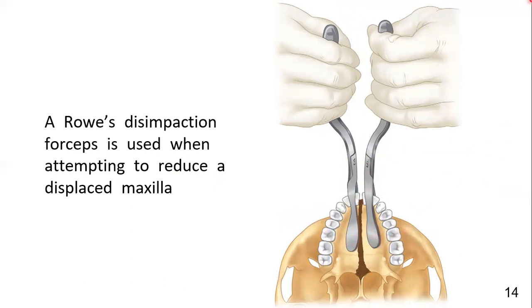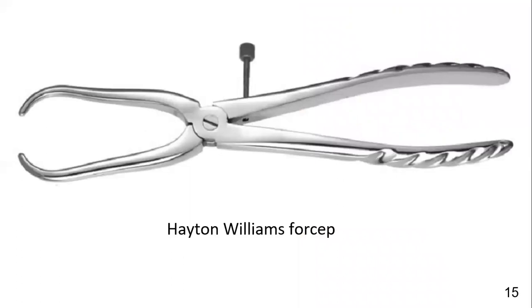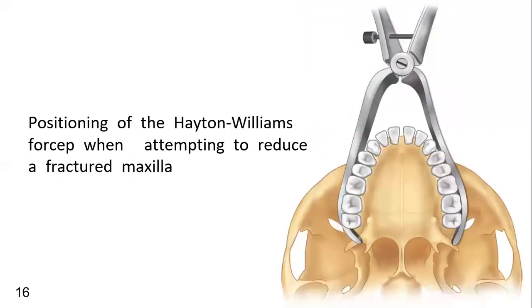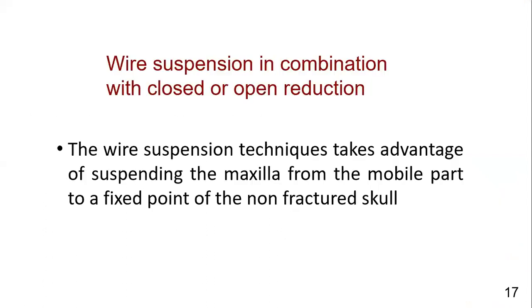The Hawthorn-Williams forceps is applied around the teeth and around the maxillary tuberosity area. The maxilla is then moved in right and left directions, as well as in a superior-inferior direction, so that the fracture area is mobilized and placed in a pre-morbid position or pre-morbid occlusion.